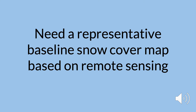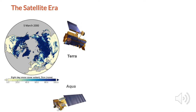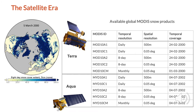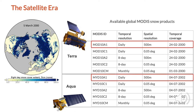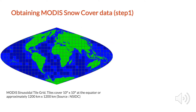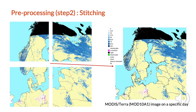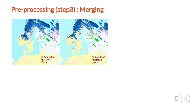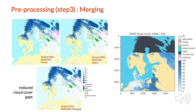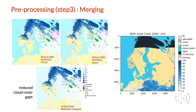We understood we need a representative baseline snow cover map based on remote sensing. This is why we started this effort, because we are in the satellite era. There are two satellites that the MODIS sensor is on board, and the available global MODIS snow cover products are quite diverse. In this study we are using high temporal and spatial resolution data from both Aqua and Terra. To create this snow cover map we are using four tiles covering the Fennoscandian area, stitching these four images together and merging both Aqua and Terra images to reduce cloud cover gaps, eventually producing daily images over the region.